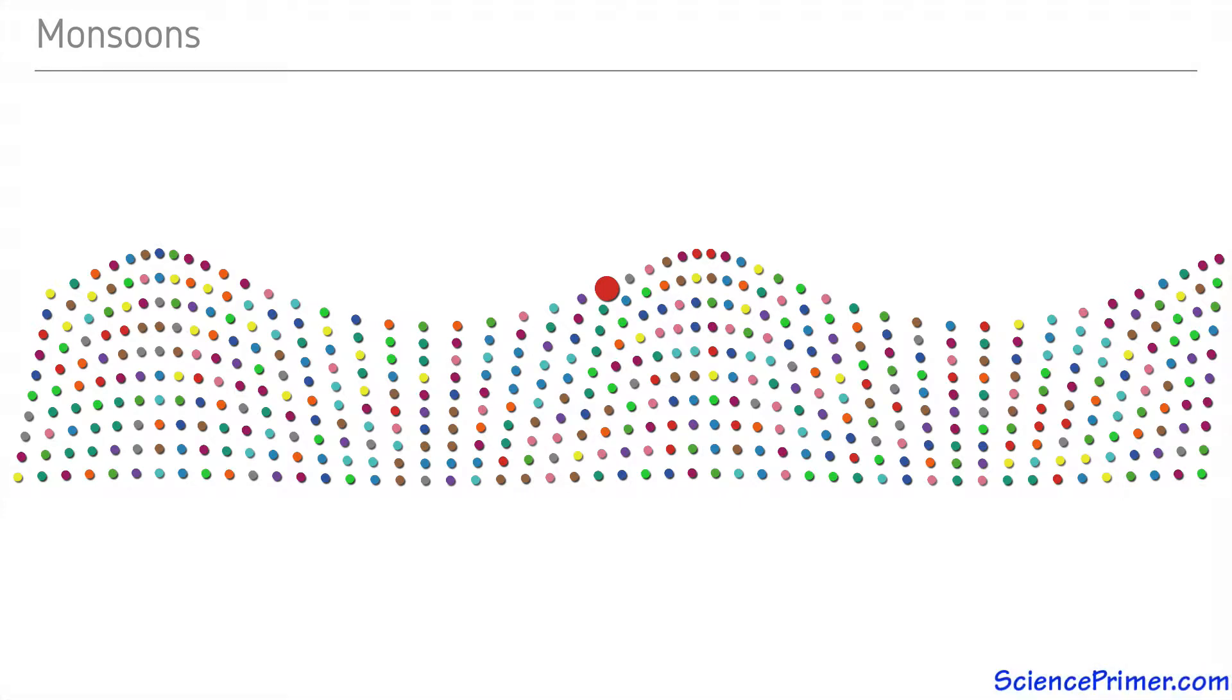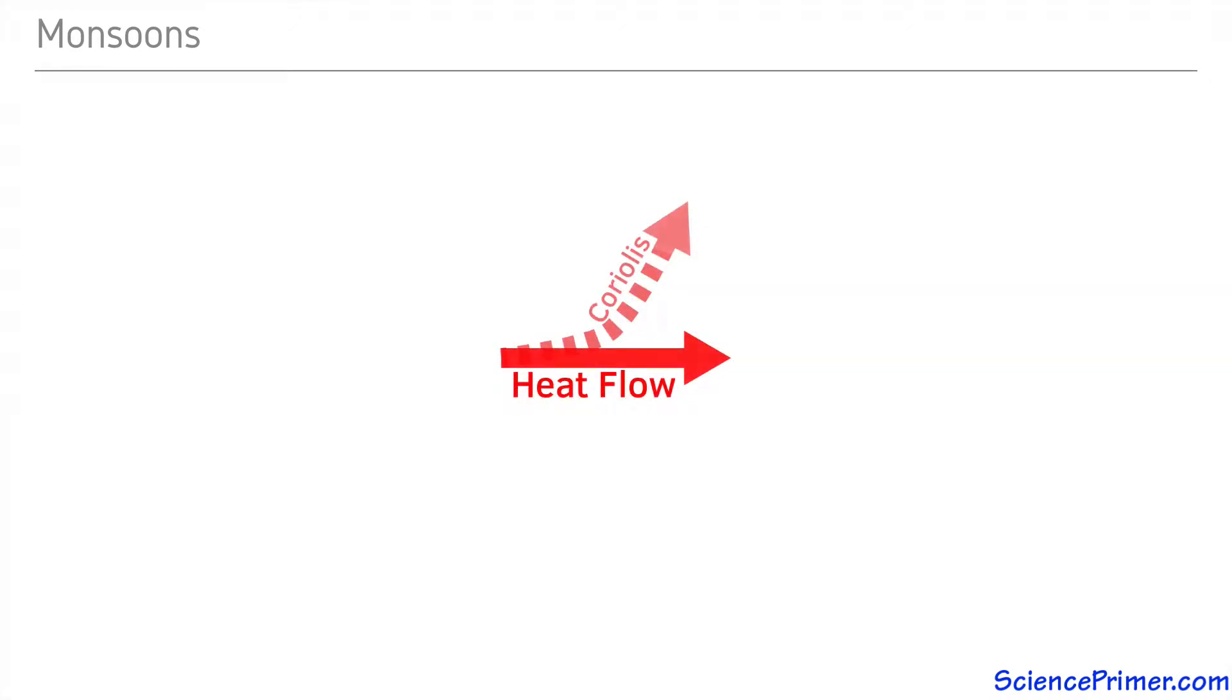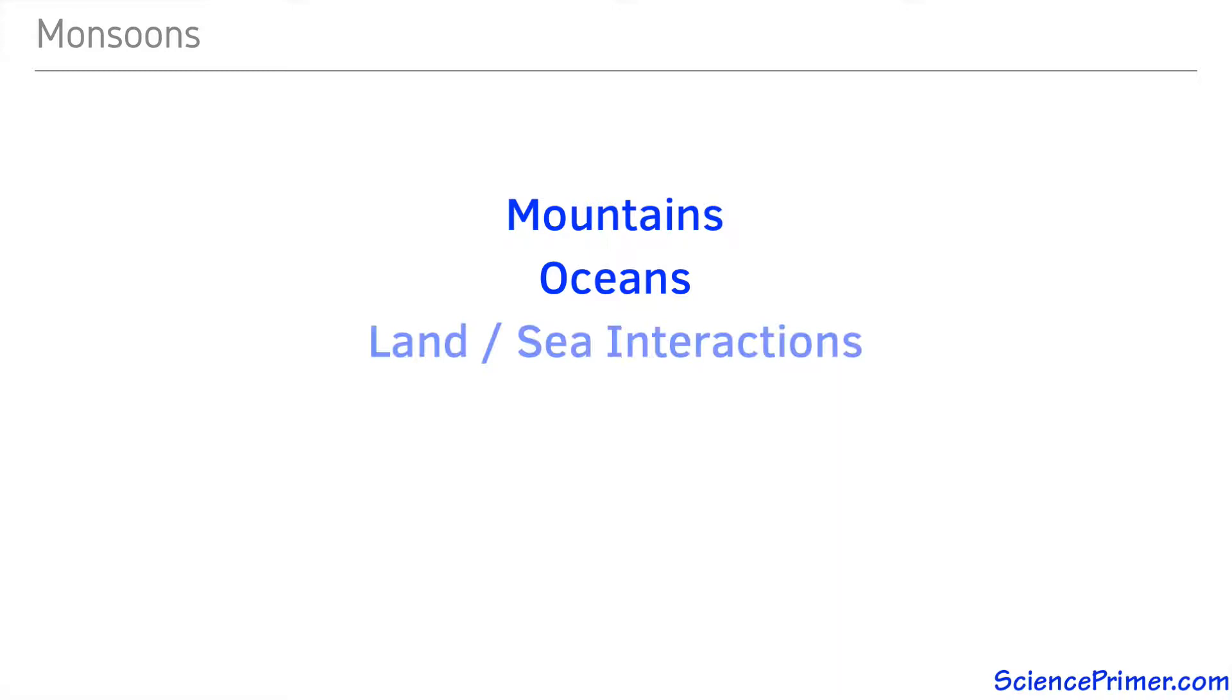Global patterns in atmospheric circulation are driven by how flows of heat from low to high latitudes are deflected by the Coriolis effect. Layered on top of these global patterns are local and regional variations driven by things such as the presence of mountain ranges, vast expanses of water, and interactions between areas of open ocean and large landmasses.